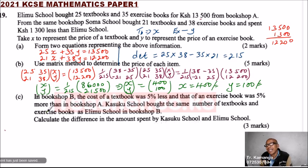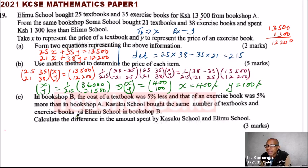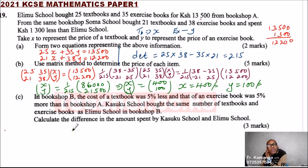Part C: in bookshop B, the cost of a textbook was 5% less, and that of an exercise book was 5% more than in bookshop A. Kasuku school bought the same number of textbooks and exercise books as Erimu school in bookshop B. Calculate the difference in the amount spent by Kasuku and Erimu school.